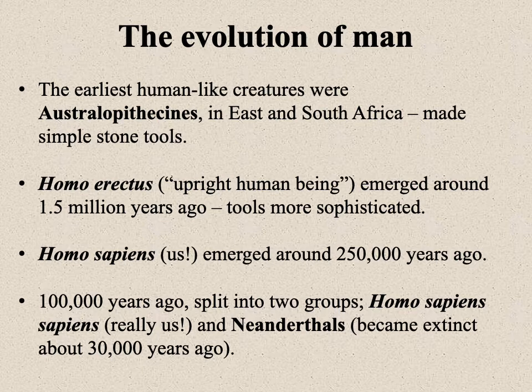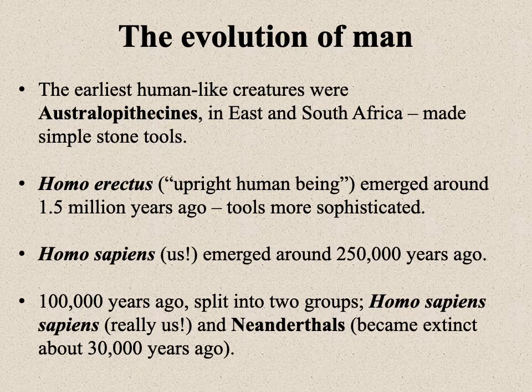It would make sense to begin with the earliest human-like creatures we're aware of, based on the fossil record and archaeological information. That would be australopithecines, who inhabited roughly east and south Africa. They used a very basic technology — simple stone tools — but this does provide an archaeological basis for what we know, and that's going back a very long way.